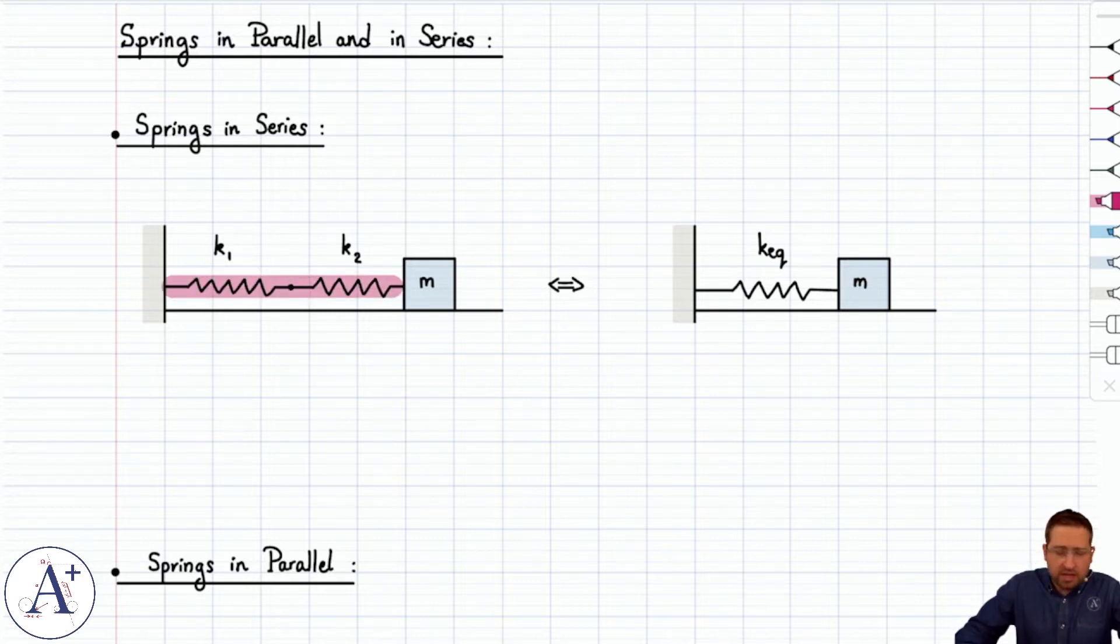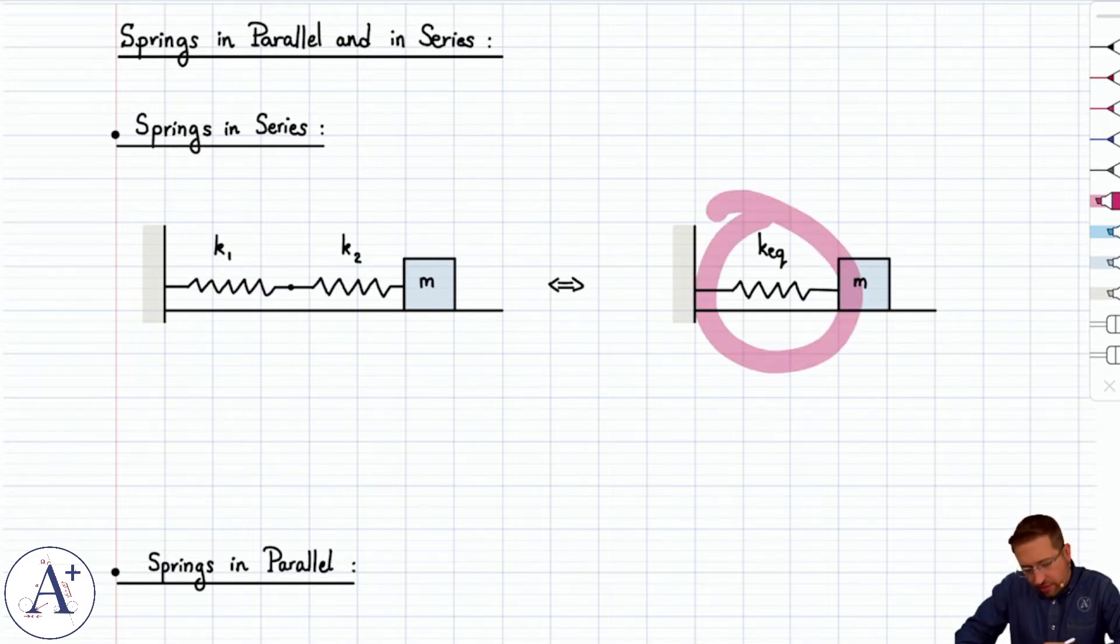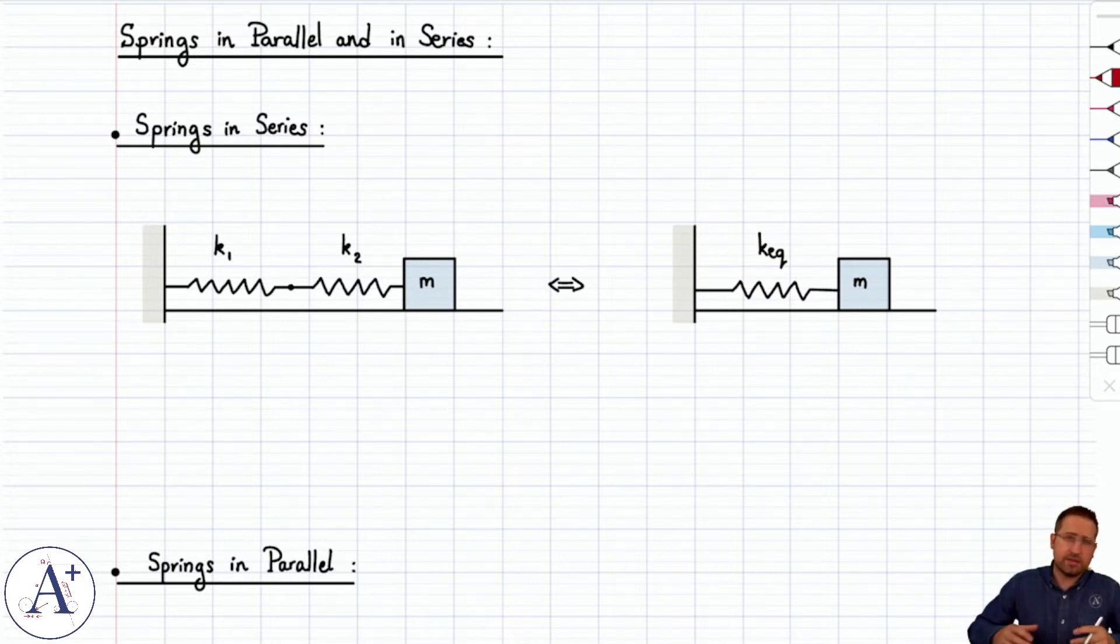For instance here, between the anchor point, which is the wall, and the mass m, there's two springs here, k1 followed by k2. And that arrangement is equivalent to one single spring with a constant k-equivalent attached to the same mass. And the idea is that we're going to give formulas to find k-equivalent from k1 and k2.